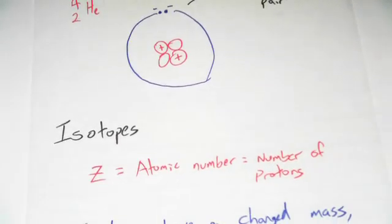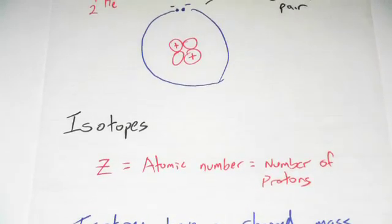Now with different atoms and different elements, you can get isotopes. So Z is the atomic number, it's the number of protons. The number of protons decides what element it is.